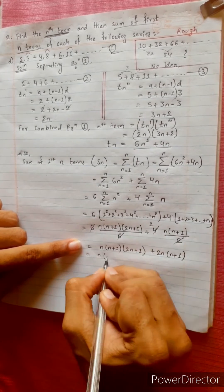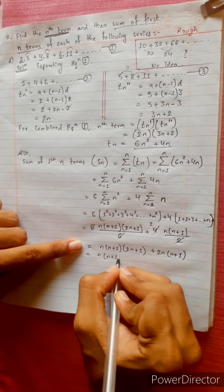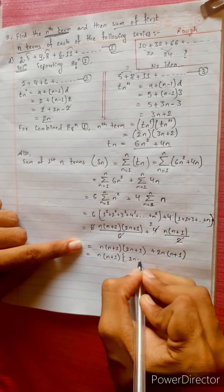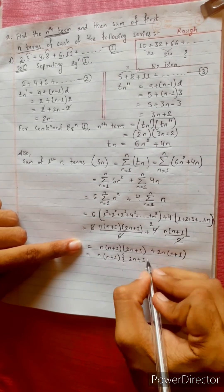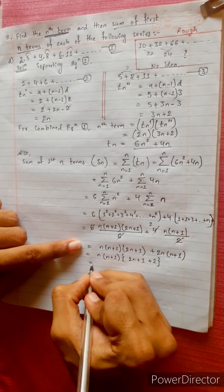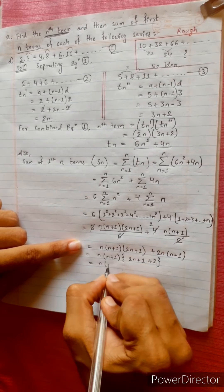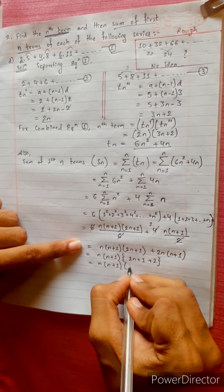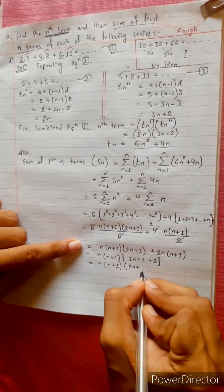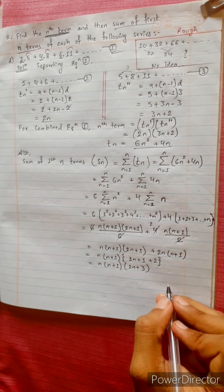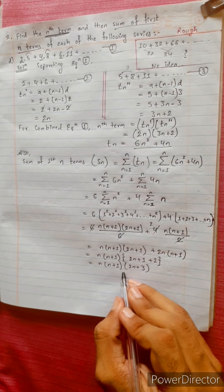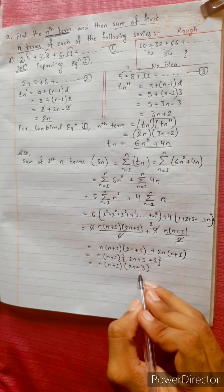Taking common factor n(n+1), the remaining terms give 2(n+1) + 2, which equals n(n+1)(2n+3), divided by 2, yielding the final sum formula: Sn = n(n+1)(2n+3)/2 plus related terms.